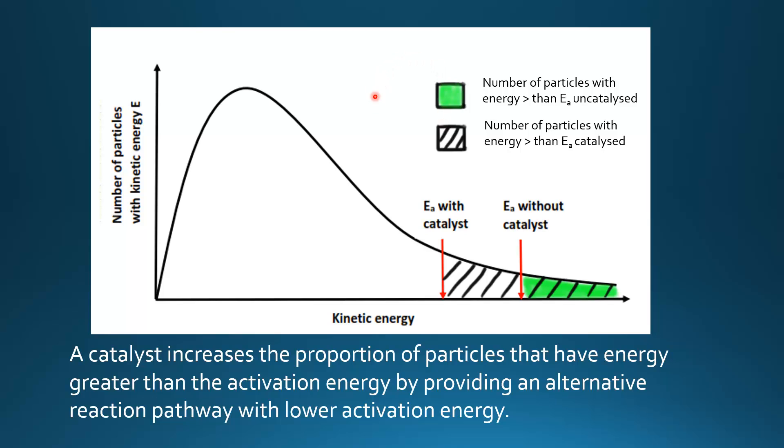So here we have a Maxwell-Boltzmann distribution curve. And we have the activation energy without a catalyst, which is represented by this green area, and the activation energy with a catalyst, which is this shaded area.